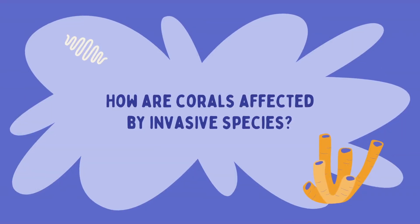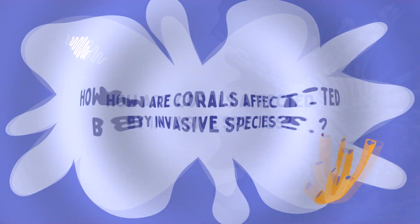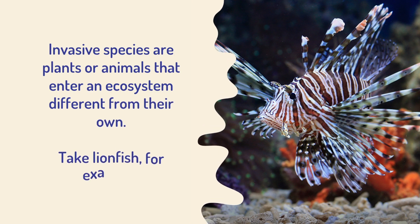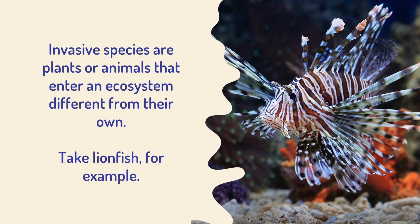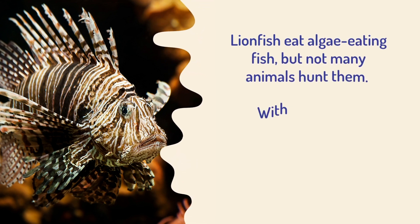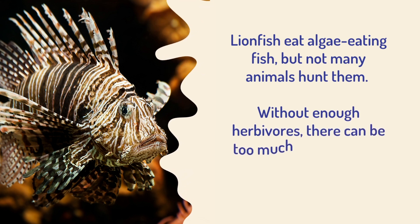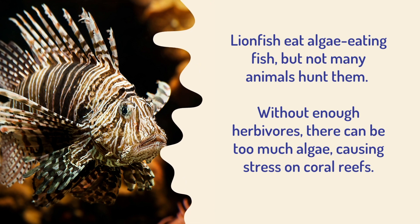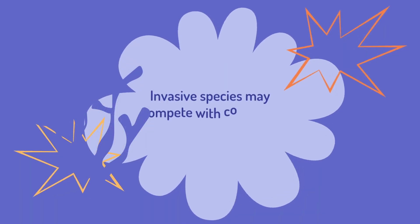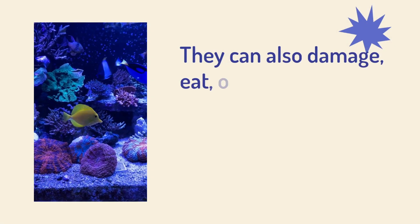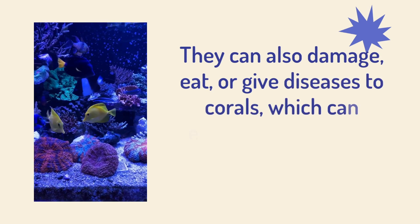So how are corals affected by invasive species? Invasive species are plants or animals that enter an ecosystem different from their own. Take lionfish as an example — lionfish are algae-eating fish, but not many animals hunt them. Without enough herbivores, there can be too much algae, causing stress on coral reefs. Invasive species may compete with corals for space and resources, and can also damage, eat, or give diseases to corals, which can endanger an entire reef.